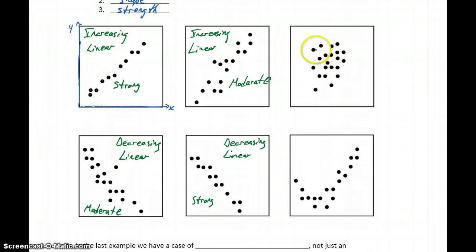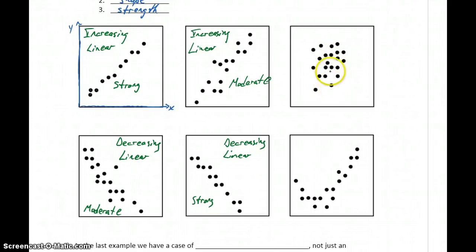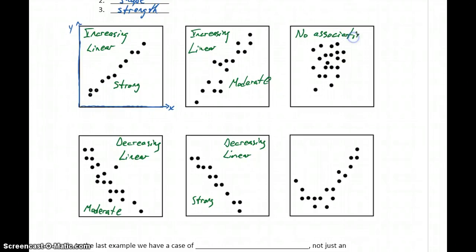For our last two examples: here we have a graph where the points are sort of scattered around, with no particular straight line pattern and no kind of shape really occurring. In a case like this, we would simply say that it looks like there's no association. The points don't seem to be following any specific pattern — they're just sort of scattered or spread around.